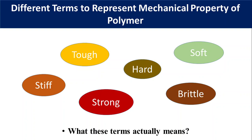It is also important that we know how to measure these properties so that we can compare different polymers and also modify polymers in such a way that they can be used for certain applications. To understand these terms and their relationship, we have to first discuss the tensile testing method and the behavior of polymeric material under stress.